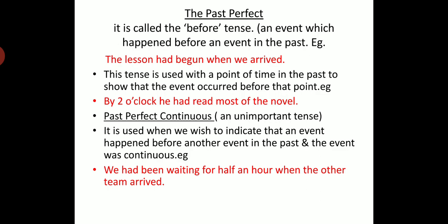Now we come to past perfect continuous, which is comparatively unimportant. It is used when we wish to indicate that an event happened before another event in the past and was continuous. For example, 'We had been waiting for half an hour when the other team arrived,' or 'He had been working for that company for 10 years when he was promoted.' We generally do not use this tense frequently.